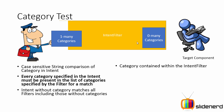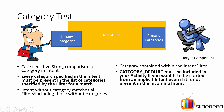When you specify an intent with no category, it will match all filters including those that don't have any categories. Category_DEFAULT is something you must include in your activity if you want it to be started from an implicit intent, because it basically tells the Android system that this activity actually plans to work as something that's going to be started by another implicit intent.